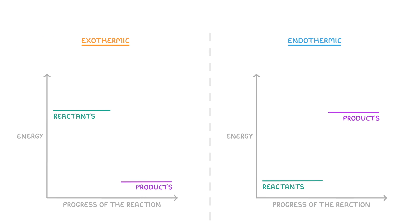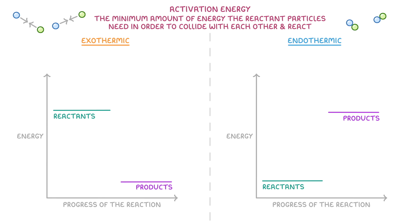So far we've covered what exothermic and endothermic reactions are and looked at the reaction profiles for each, which you might have to draw in the exams. The last thing we need to cover is activation energy, which is the minimum amount of energy the reactant particles need in order to collide with each other and react. So the greater the activation energy, the more energy that will be required to start the reaction. We can show this activation energy on our reaction profiles when we draw a curve from the reactants to the products, to show how the energy changes during the reaction. Specifically, this increase in energy from the reactants' energy level to the highest point on our curve is the activation energy.